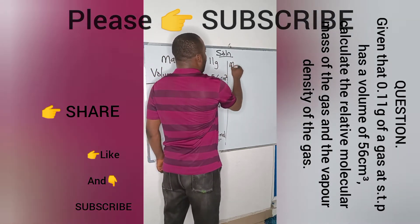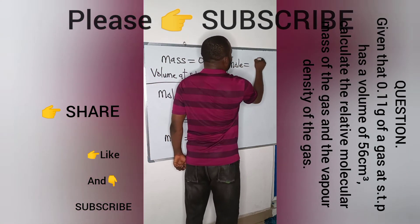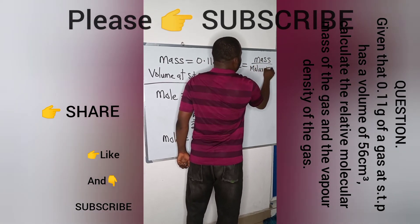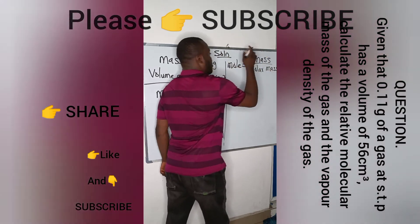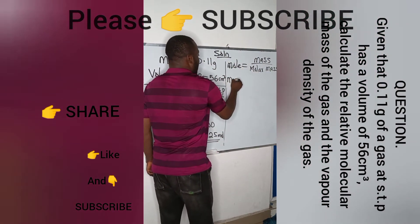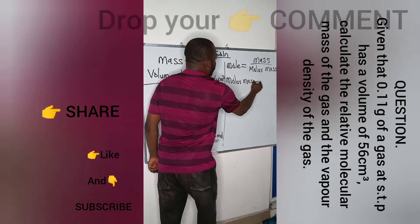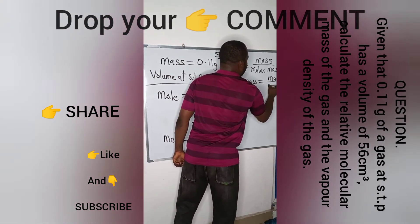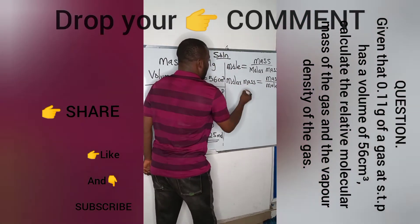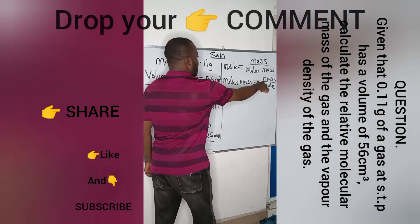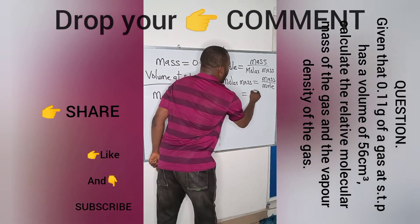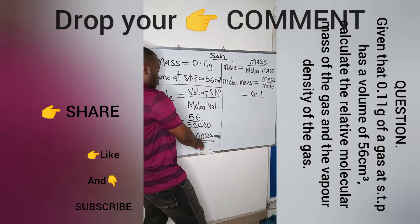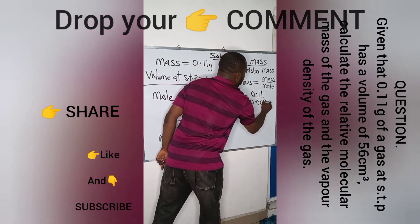Recall that mole is equal to mass divided by molar mass. If we make molar mass the subject of formula, we are going to have that molar mass of a gas is equal to mass of the gas divided by the mole. Our molar mass becomes the mass which we are given here as 0.11, while the mole which we got is 0.0025.